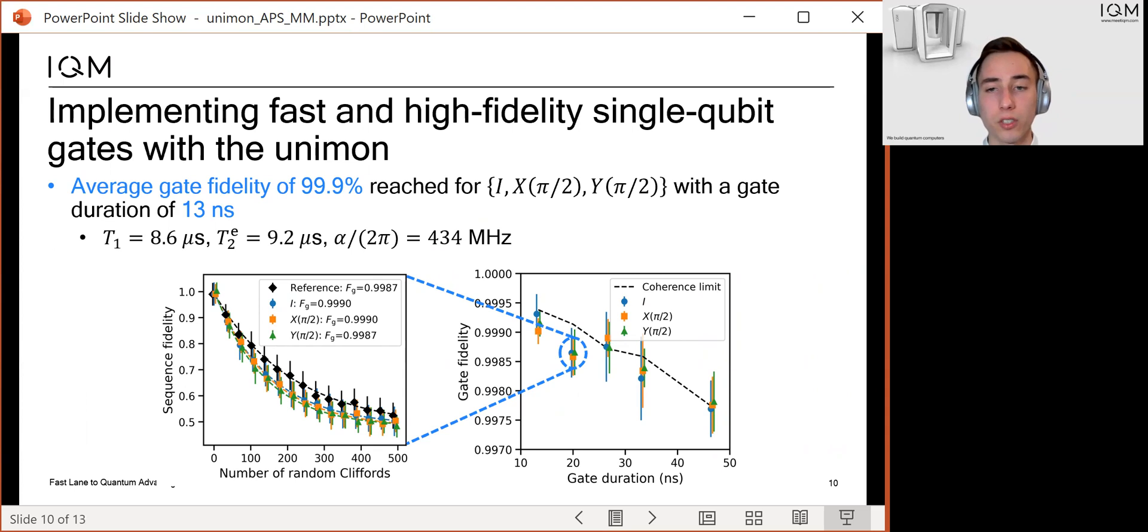On the left, you can see the results of an example interleaved randomized benchmarking experiment. In the experiment, we used drag pulses and a gate duration of 20 nanoseconds. Based on the experiment, we measured a gate fidelity as high as 99.9%.